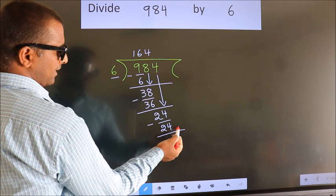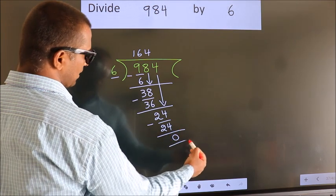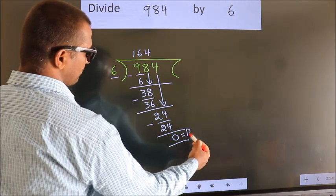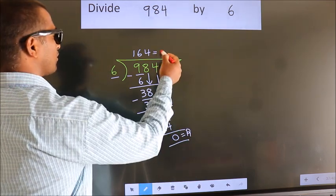No more numbers to bring down. So we stop here. This is our remainder. This is our quotient.